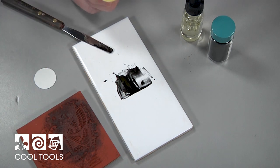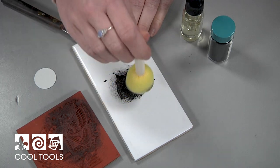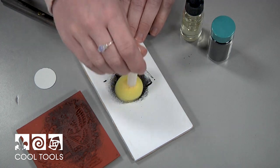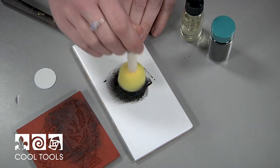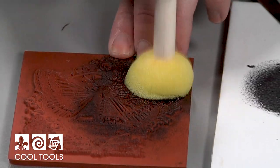So I'm going to use a sponge applicator to pick up the fine line black. I'm just going to kind of pounce and evenly distribute it on the sponge before coming over to my stamp and applying it.